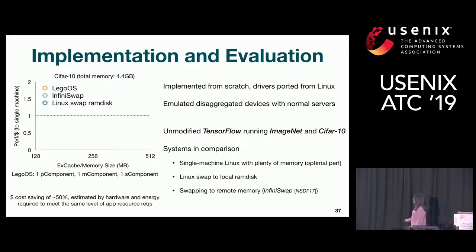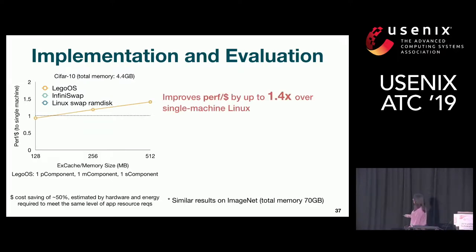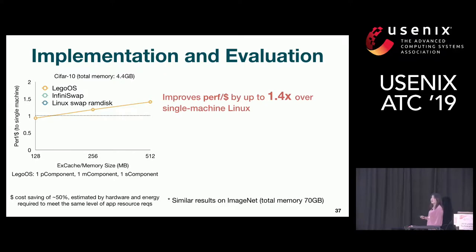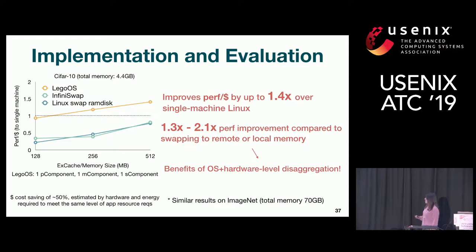This figure shows the CIFAR-10 result — ImageNet is similar. The y-axis shows performance per dollar, calculated by hardware and energy cost; roughly speaking, with LEGO OS we can save about half the cost. The x-axis is local memory size or EX cache size. Looking at pure LEGO OS compared to single-machine Linux, LEGO OS can improve performance per dollar by up to 1.4 to 1.5 times. Comparing pure performance, LEGO OS improves performance of the swap systems by 1.3x to 2.1x. This is the power of building something from the ground up and solving things from the OS and hardware level.